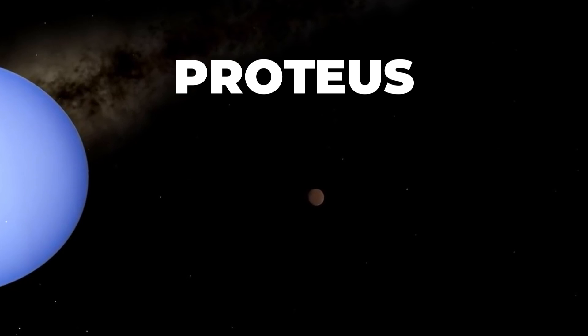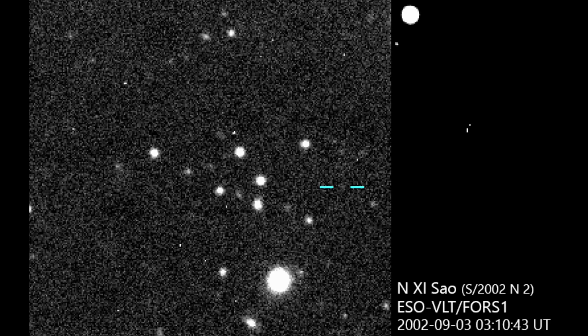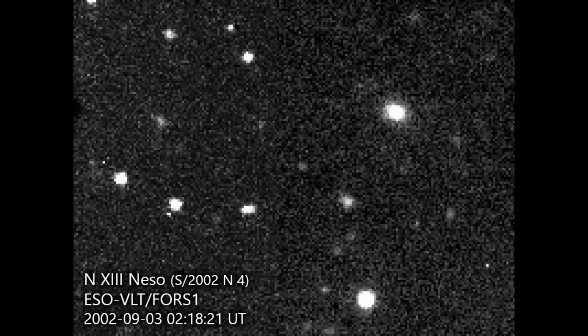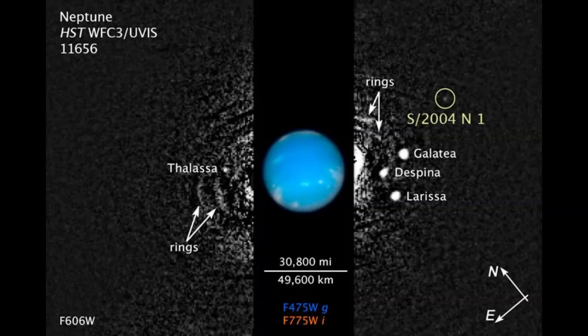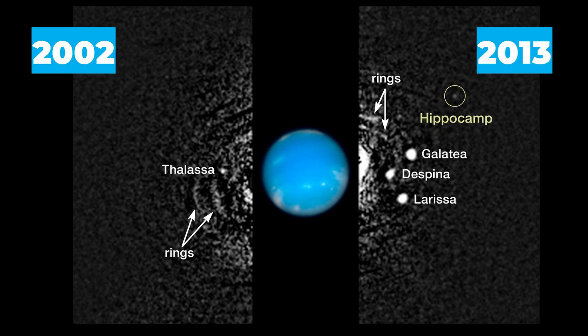Recent discoveries of Neptune's moons, S2002N2, named Sao, S2002N4, called Nesso, and S2004N1, later named Hippocamp, date back to 2002 and 2013, respectively.